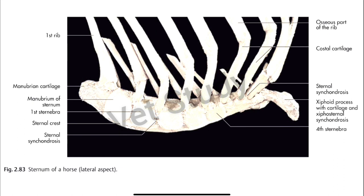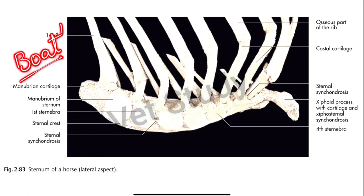Now let's talk about the sternum of different species. First is the horse. The horse sternum is formed by the fusion of seven sternibrae. The most important feature of the horse sternum is its boat shape. It presents a prominent crest and the lateral surfaces are convex. The xiphoid cartilage is flat and rounded, and the manubrium sterni has a cranial cartilaginous extension.